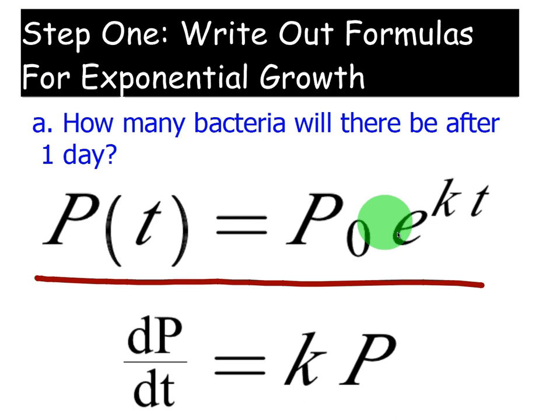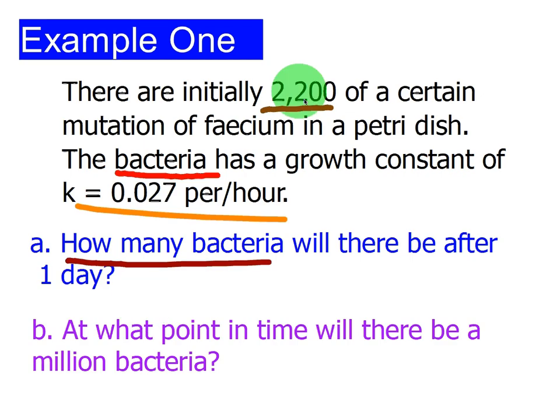You can write this in many different ways. You can write it in terms of a compound interest equation. It's the same exact thing. You can use A for amount instead of P. It doesn't really matter. But for this particular equation, since we're going to use the formula that we proved, P will represent the population of the bacteria, and P0 will represent the initial population, which they just gave us, of 2200.